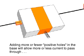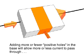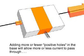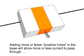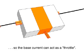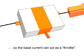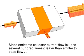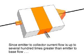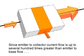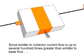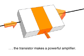Adding more or fewer holes into the base with positive current allows more or less current flow from emitter to collector, like a throttle controlling the speed of an engine. Because the emitter to collector current flow is up to several hundred times greater than the emitter to base current, the transistor makes a powerful amplifier.